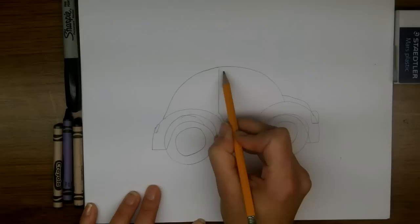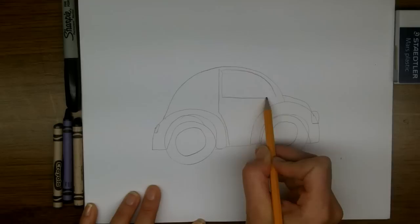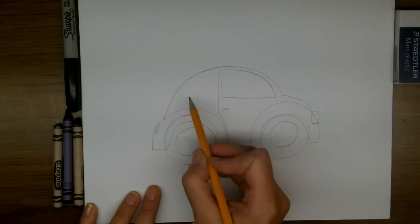The windows on a beetle are curved. So the front window curves along the hood shape, along the roof shape, and so does the back window.